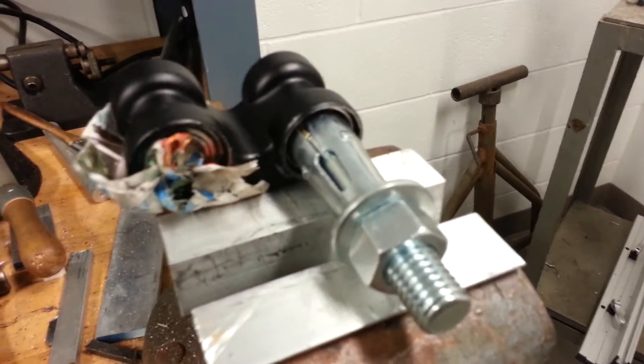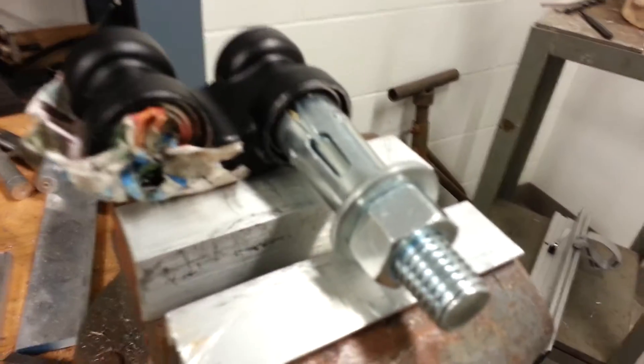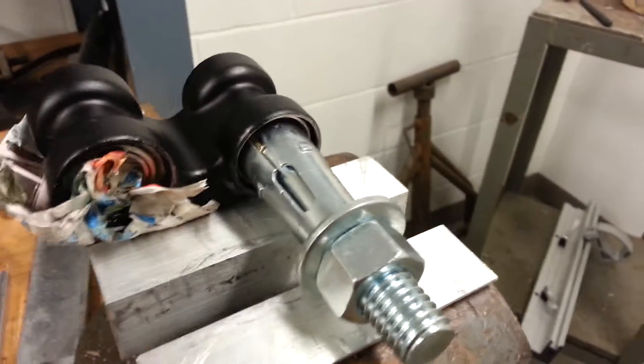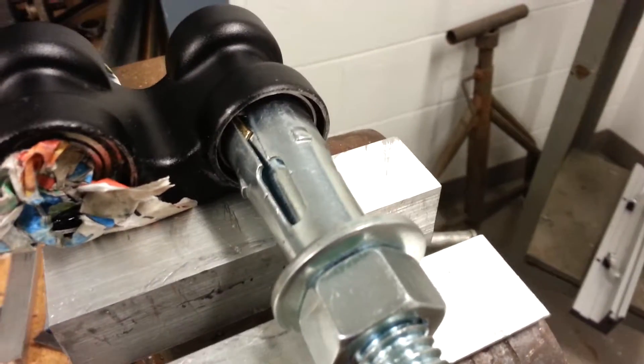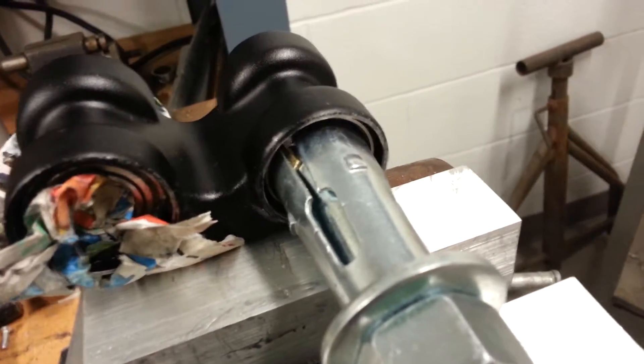I have made a puller out of a wedge bolt and you can just see a piece of brass shim material inside there.